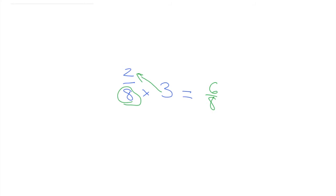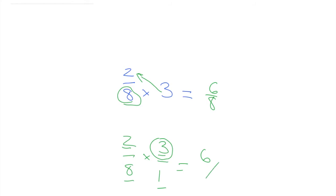Now this might be tricky for some people, so I'm going to redo the problem. We're going to write three as a whole number — three over one. Technically this fraction already represents a whole; you can write it as three or three over one, it stays the same. Now we can do normal multiplying: two times three equals six, and then eight times one equals eight. That's an easier way, and it doesn't get confusing.